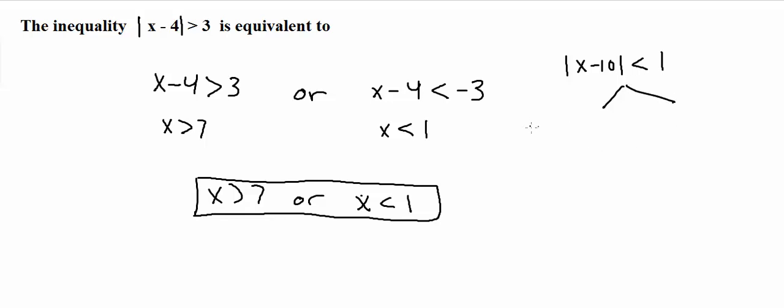So it would be x minus 10 is less than 1. So in that case all I did was I removed the absolute value signs. Then I would do the same thing. So I would do x minus 10 is greater than negative 1. So again I just flipped the inequality and I added a negative.